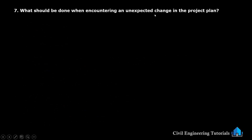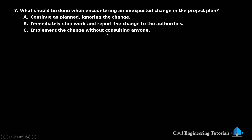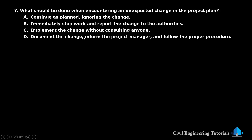Seventh: what should be done when encountering an unexpected change in the project plan? Option A: continue as planned, ignoring the change. Option B: immediately stop work and report the change to the authorities. Option C: implement the change without consulting anyone. Option D: document the change, inform the project manager, and follow the proper procedure.